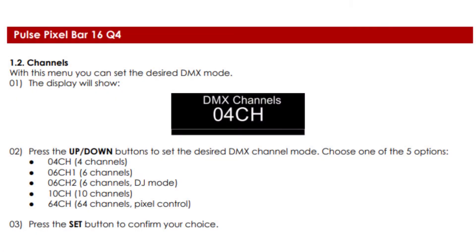Look up the user manual for your fixture online and find the section that says DMX channel mode. Most fixtures have more than one mode. For example, on this fixture I can control just the red, green, blue and white color of the LED in mode 1, which takes up four addresses.